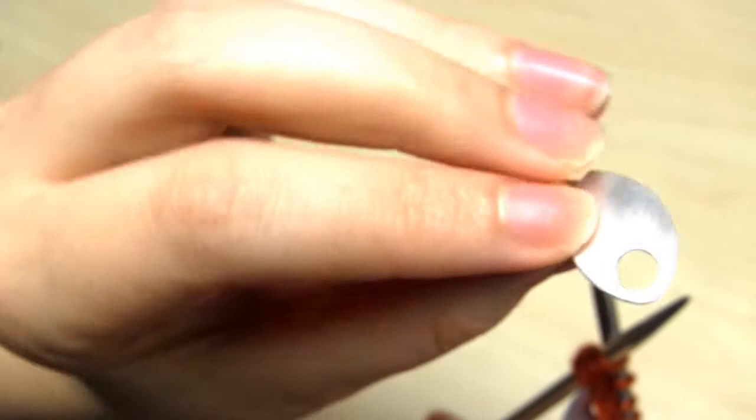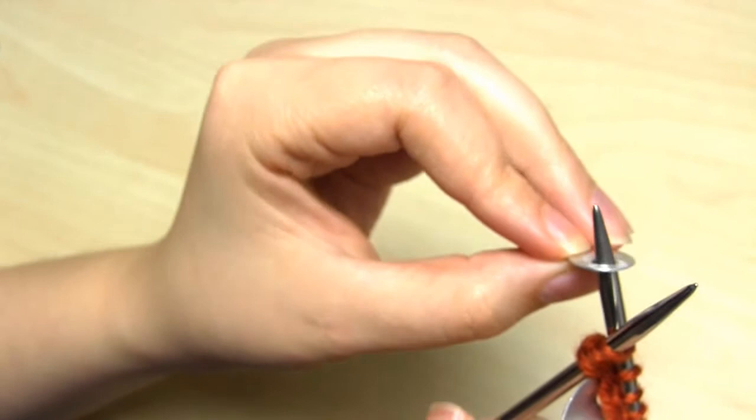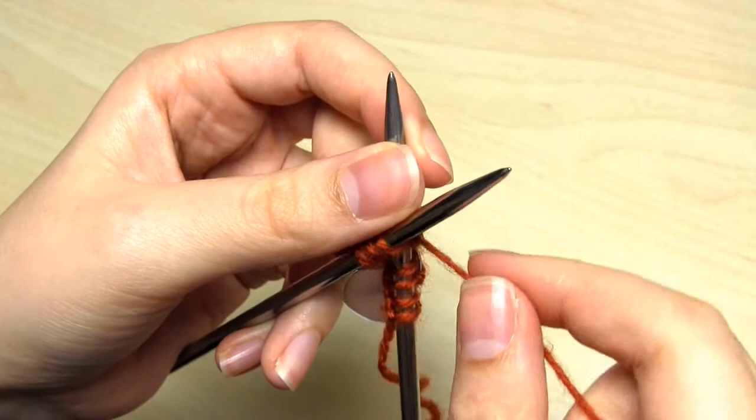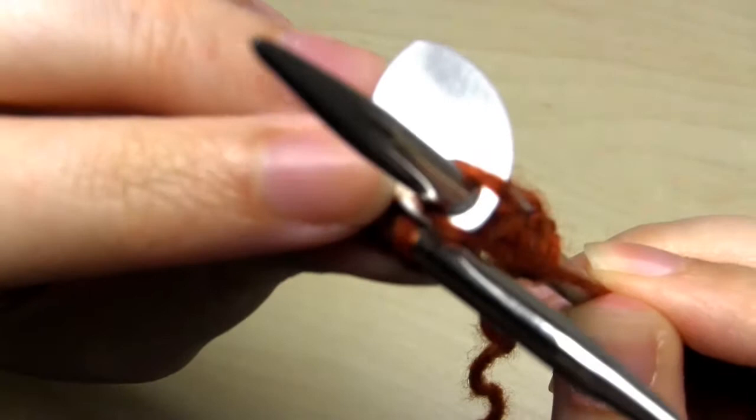On the knit rows of stockinette stitch, the scales are always added to the side of the knitting that's away from you. You then feed this scale onto the tip of the right hand needle. You then wrap the working yarn around the right hand needle, as usual.